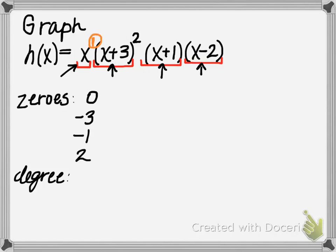We have x to the first power and then x plus 3 squared. That would yield an x squared. And then we have an x to the first here as well as an x to the first here. So taking a look at all of those exponents, if you were to expand them, you would see we would have a degree of 5.